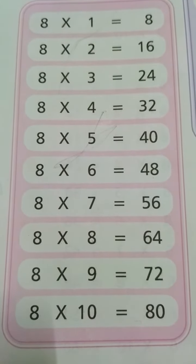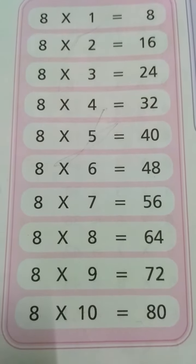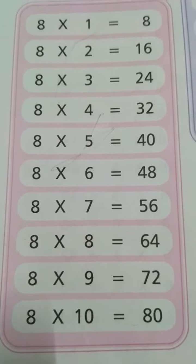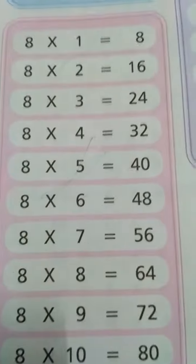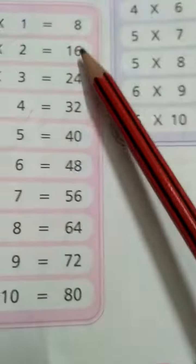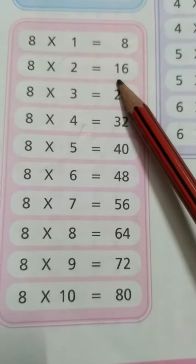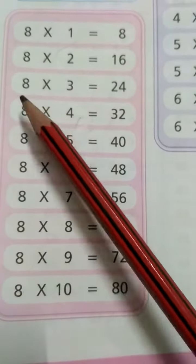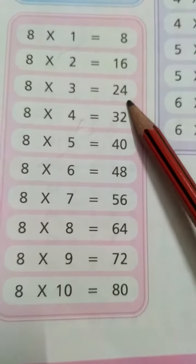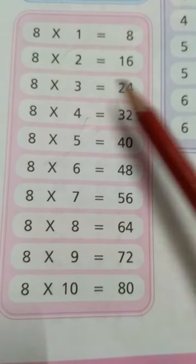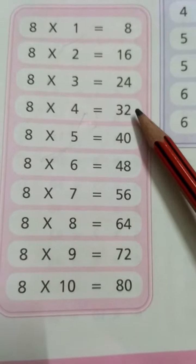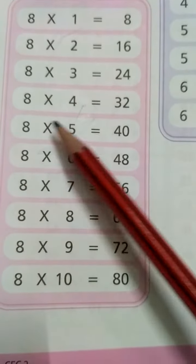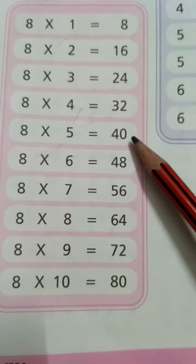Maths Tables: 8th Table. 8 ones are 8. 8 twos are 16. 8 threes are 24. 8 fours are 32. 8 fives are 40.